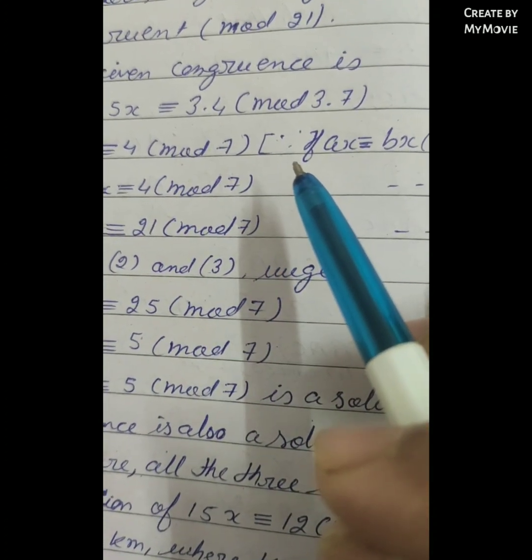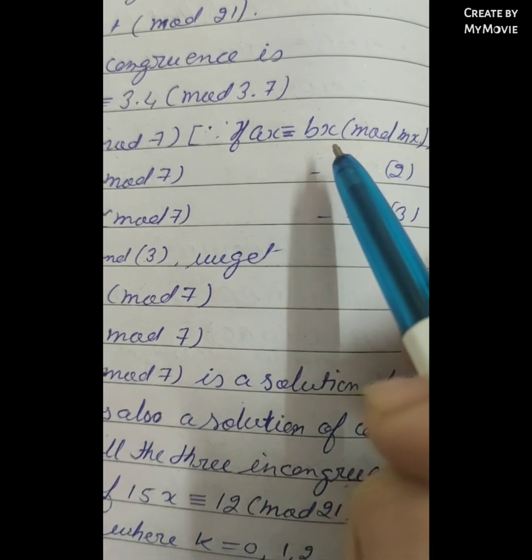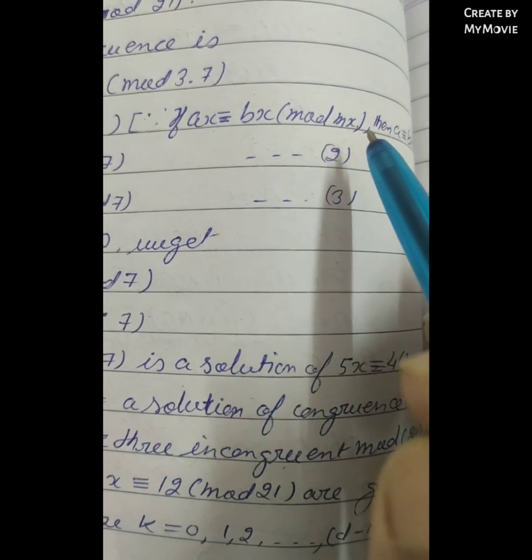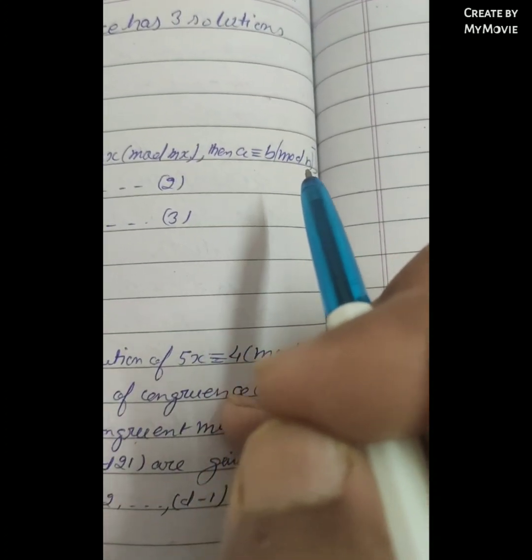because if ax ≡ bx (mod mx), then a ≡ b (mod n).